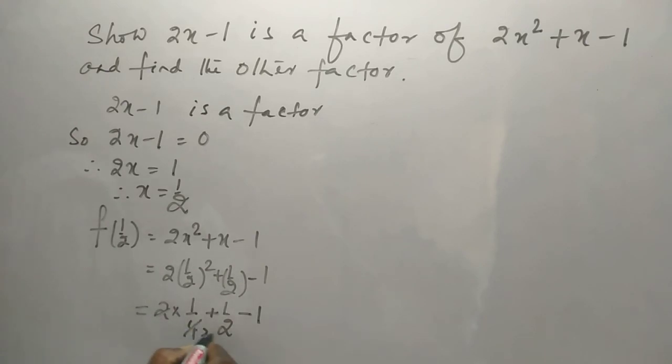This is cancelled half plus half minus 1, that means all are cancelled, this is 0. Yes, it is a factor.